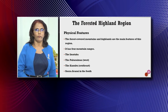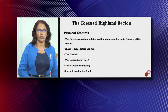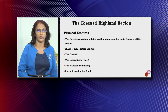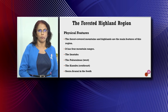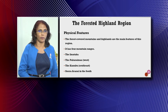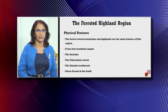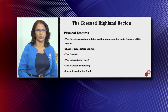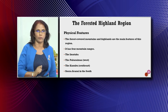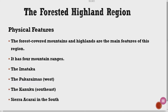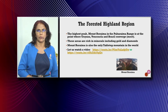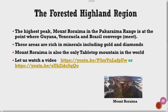Physical features: the forest-covered mountains and highlands are the main features of this region. It has four mountain ranges: the Imataka, the Pakarimas to the west, the Kanuku to the southeast, and Sierra Akarai in the south. The highest peak, Mount Roraima, is in the Pakarima range at the point where Guyana, Venezuela, and Brazil converge or meet. These areas are rich in minerals, including gold and diamonds.